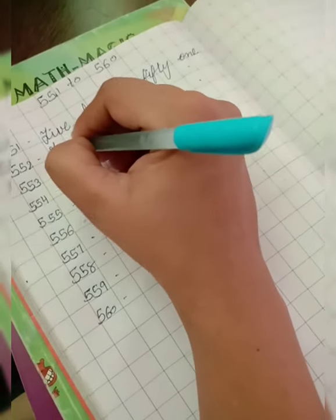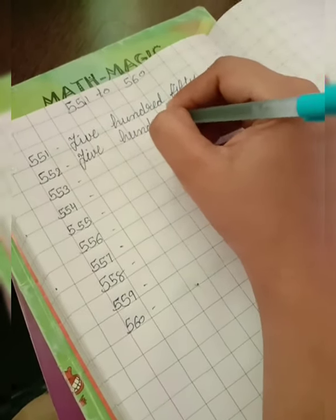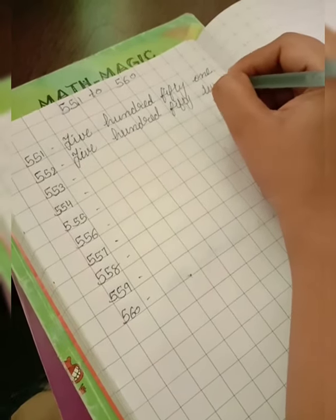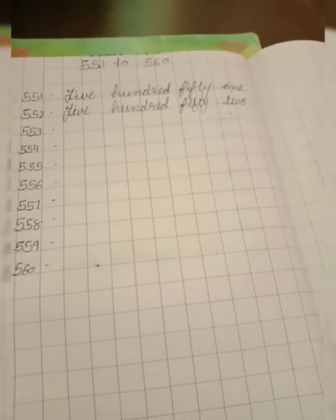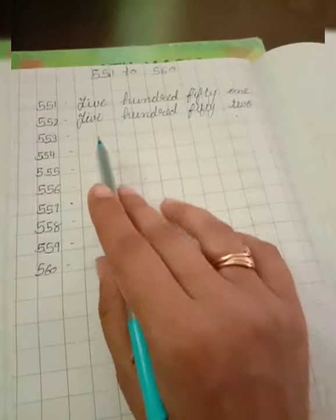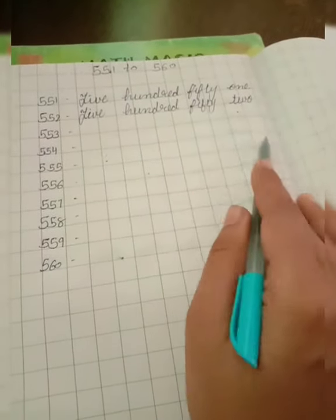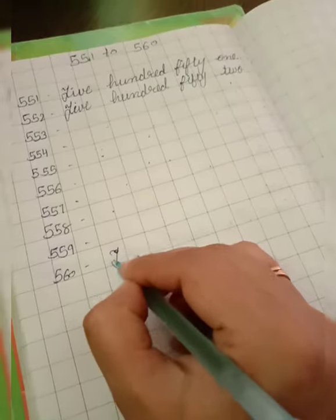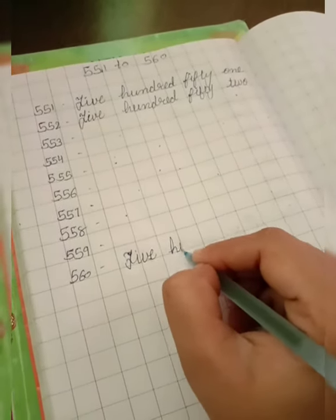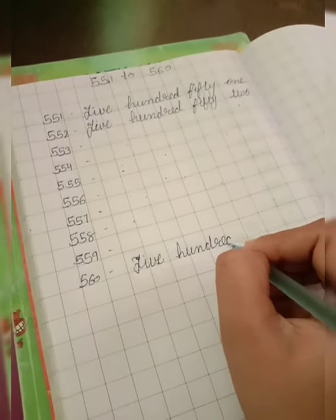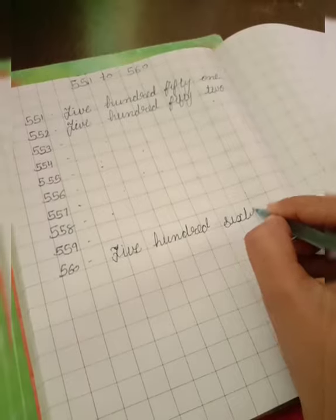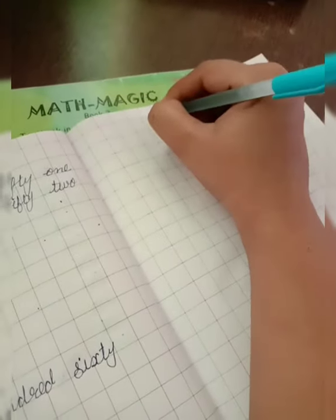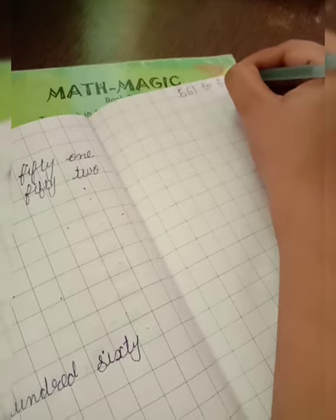F-I-V-E 5, H-U-N-D-R-E-D 100, F-I-F-T-Y 50, T-W-O 2. 552. You will write 553, 554, 555, 556, 557, and pura complete. Last me aapko likhwana hi hai: F-I-V-E 5, H-U-N-D-R-E-D 100, S-I-X-T-Y 60. 560. Now we will complete 561 to 570.